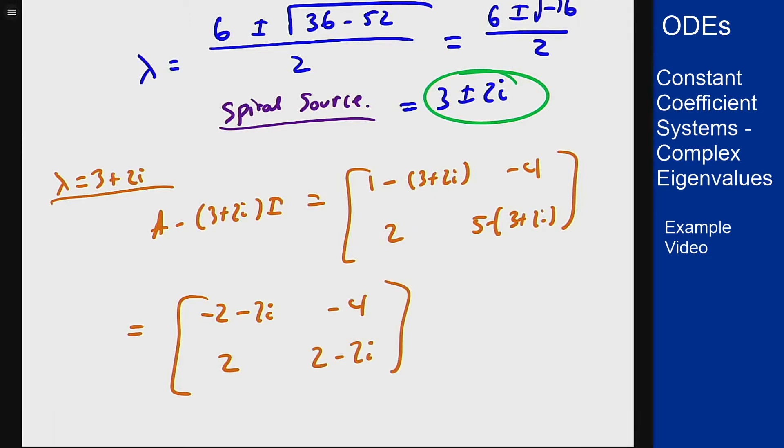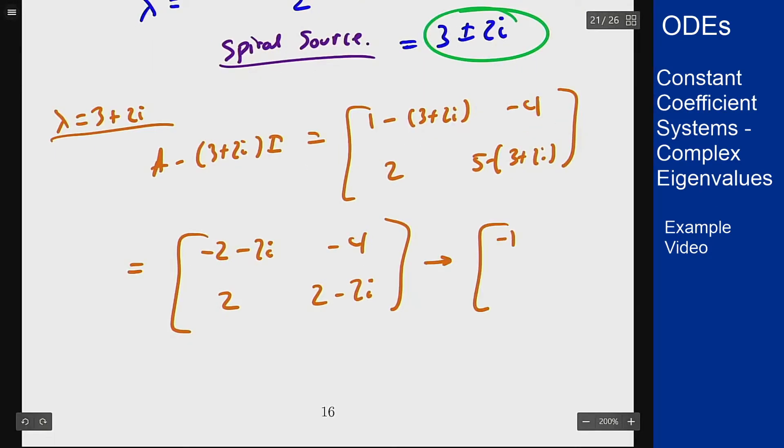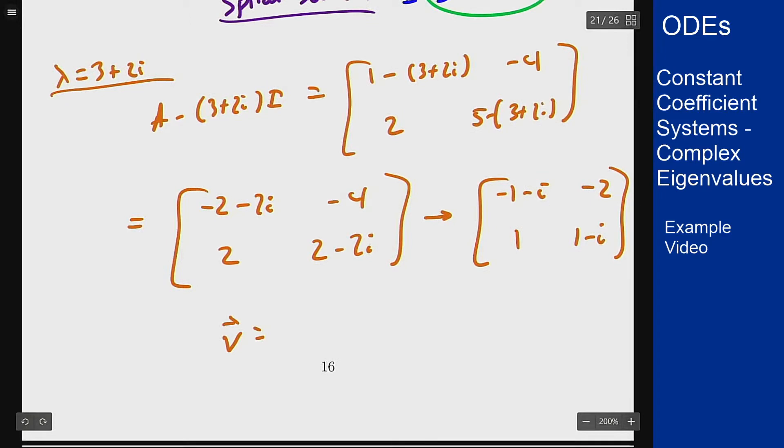We divide both rows by 2: [-1 - i, -2; 1, 1 - i]. Multiply the top row by (1 - i); these are equivalent equations. We can just use the bottom one to write an eigenvector. This means that an eigenvector must satisfy v₁ + (1 - i)v₂ = 0, or I can take it to be [1 - i, -1].